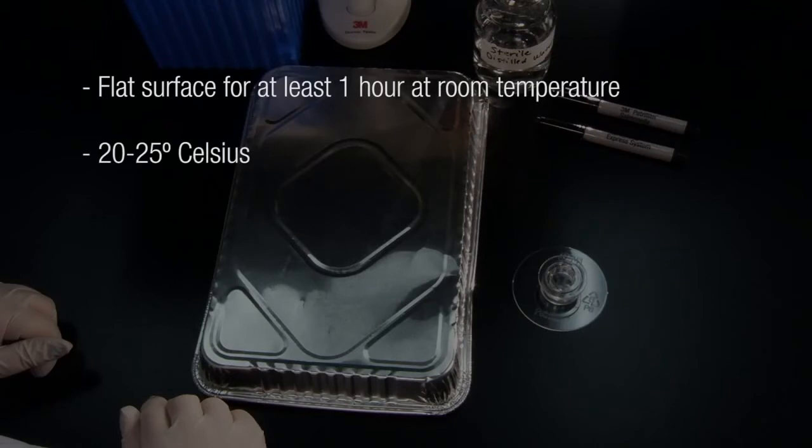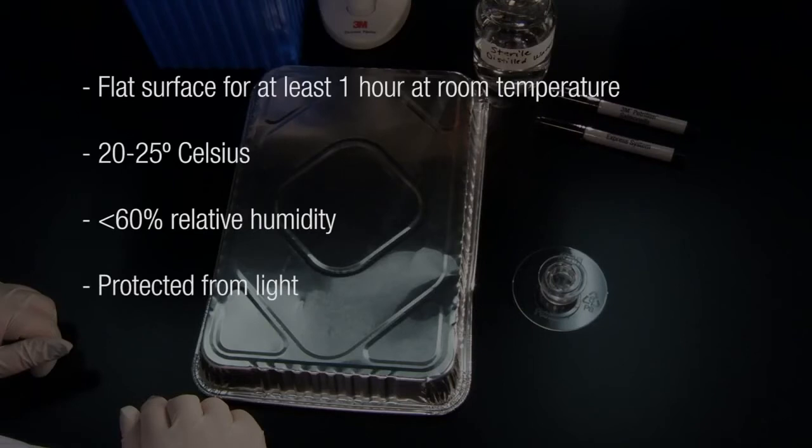Place the 3M Petrifilm Salmonella express plate on a flat surface for at least one hour at room temperature, 20 to 25 degrees Celsius and less than 60% relative humidity, protected from light to allow the gel to form. An aluminum foil tray is being used here.